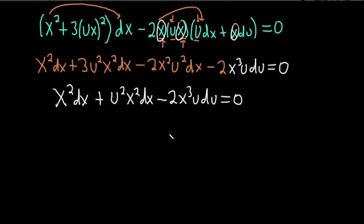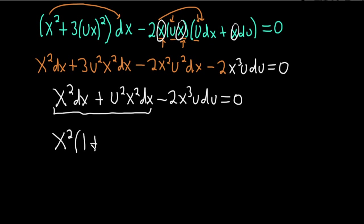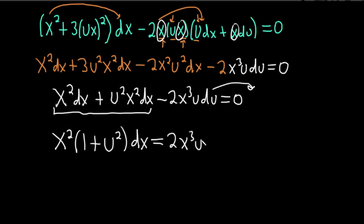We combine the first two terms by factoring out x squared and dx: this gives x squared times (1 plus u squared) dx. Then we take the remaining term to the other side to get x squared (1 plus u squared) dx equals 2x cubed u du.